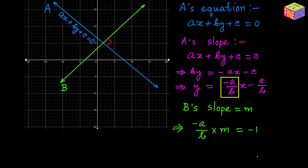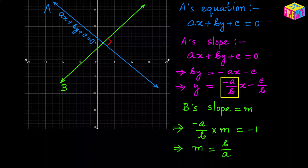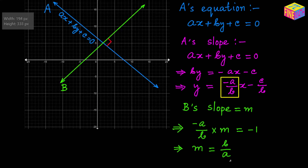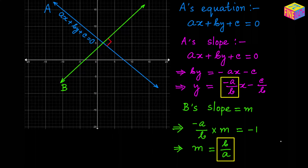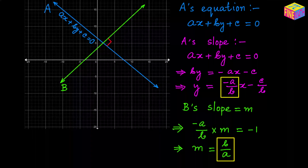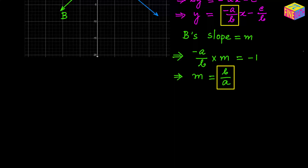From that product we can easily calculate M. So M equals B over A. We have found the slope of straight line B in terms of A and B, which are the coefficients in the equation of straight line A. Now that we know the slope, let's come up with the equation of straight line B.